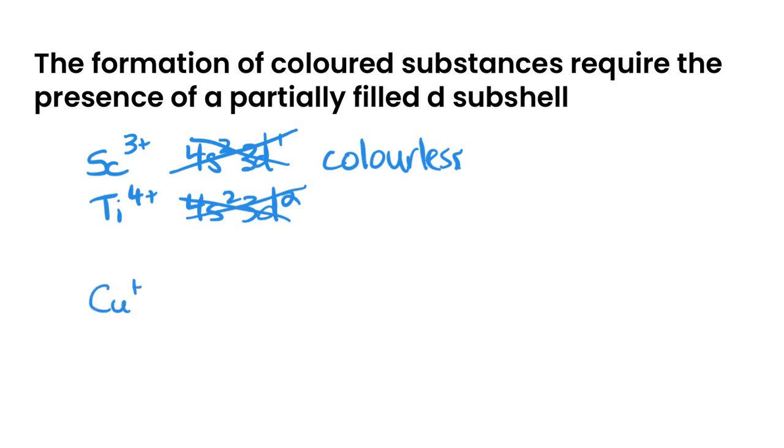Similarly, a copper + ion or a zinc 2+ ion both have fully filled 3d orbitals. So they both have 3d10, which means that when they're fully filled, they are also colorless because there are now no places to promote electrons up to the higher set of d orbitals.